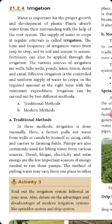Effective irrigation is a controlled and uniform supply of water to crops in the required amount, at the right time, with minimum expenditure. Irrigation can be carried out by two different methods.